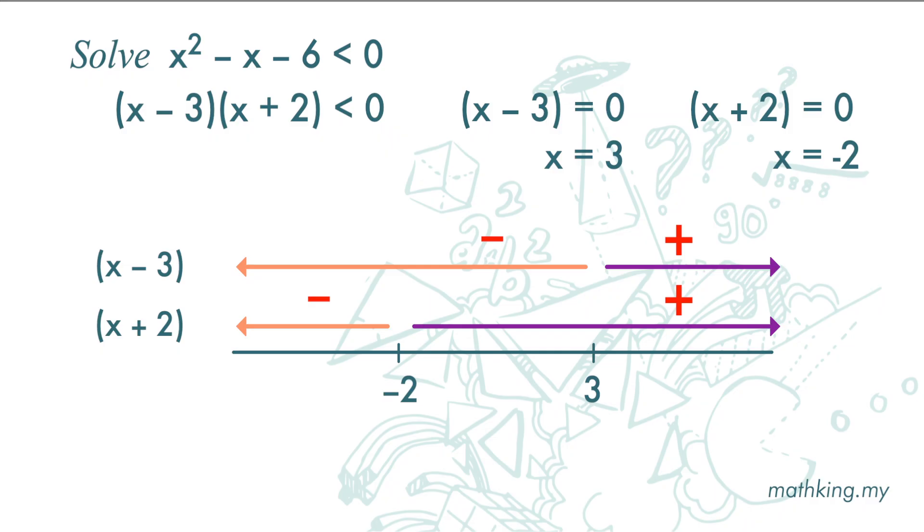x minus 3 times x plus 2, so we have 3 regions. What we want is x minus 3 times x plus 2 is less than 0. Negative of x minus 3 times positive of x plus 2 we get negative.